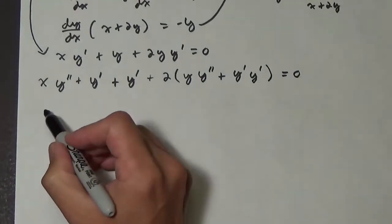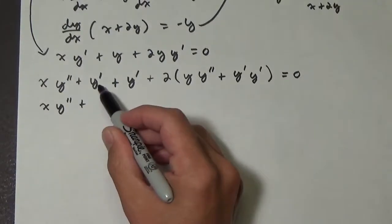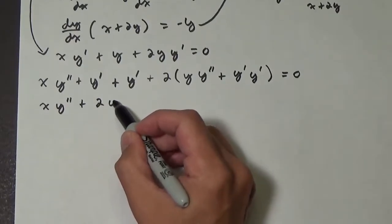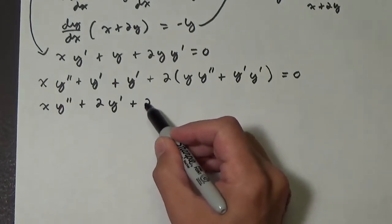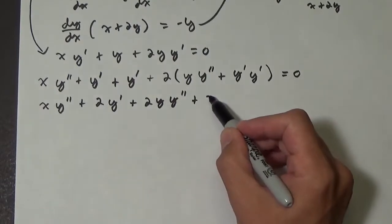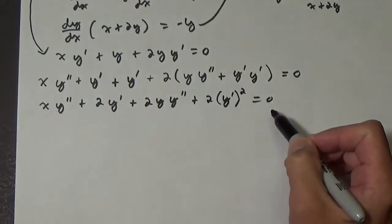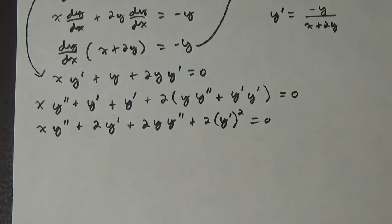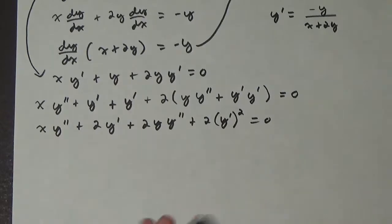Let's clean this up. We have x y double prime, and we have two y prime terms so that gives us plus 2y prime. Distributing the 2, we get plus 2y y double prime plus 2y prime squared equals zero. The next step is to get all of the y double primes on one side and everything else on the other.